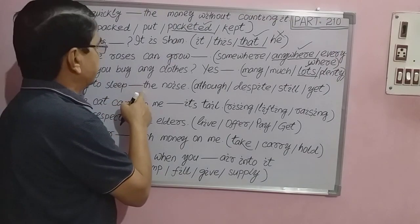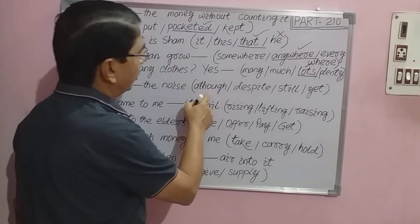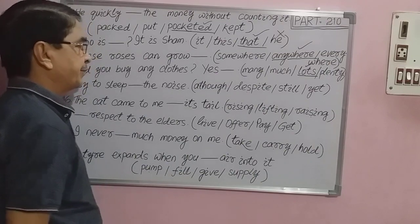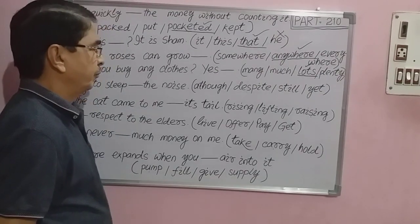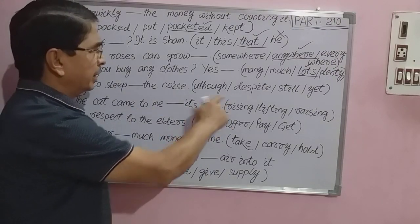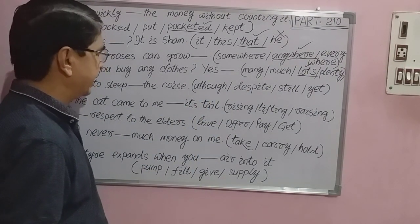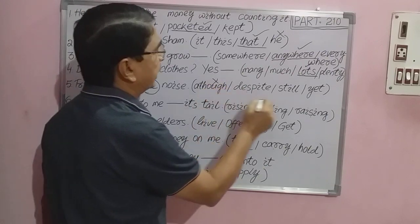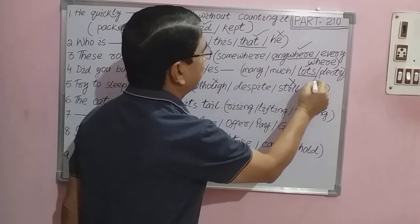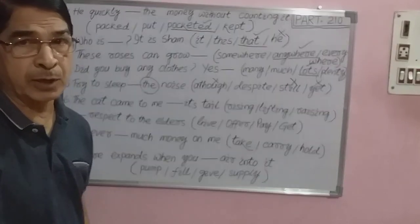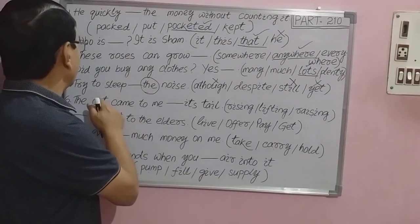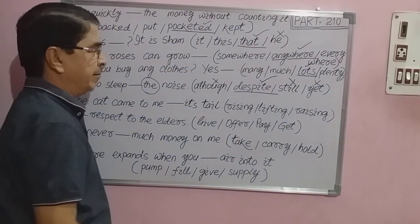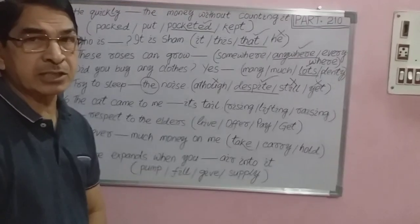Question number five: 'Try to slip — ___ the noise.' Options: A) although, B) despite, C) still, D) yet. This is very simple and easy to pick out the correct word. The answer is 'despite' — try to sleep despite the noise. That would be the correct answer in your examination hall.